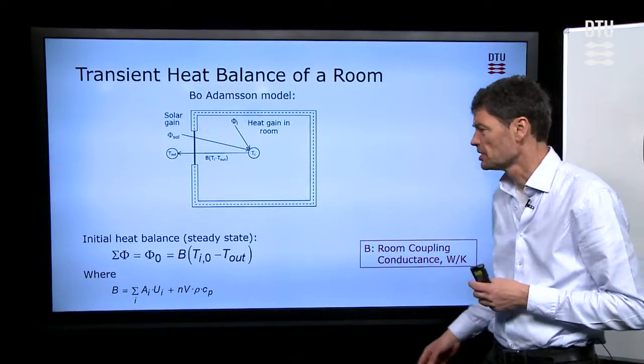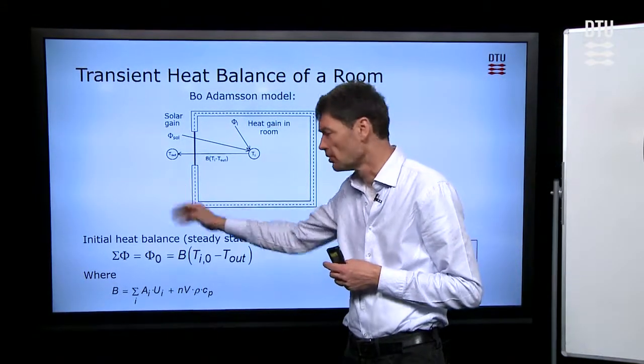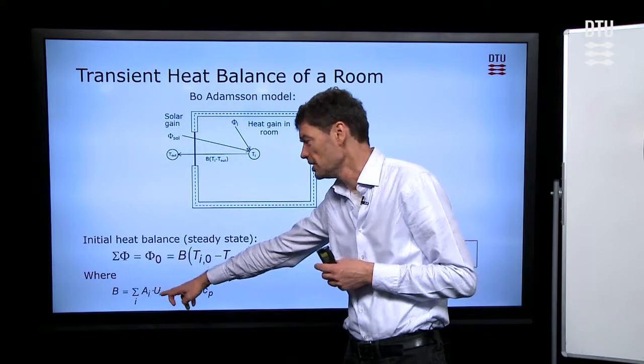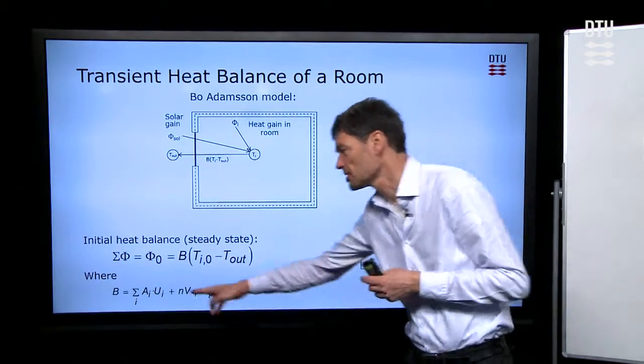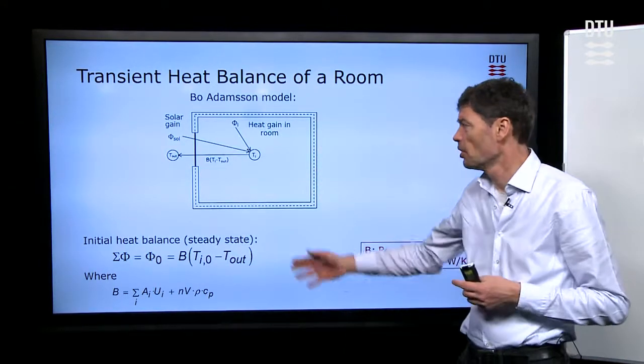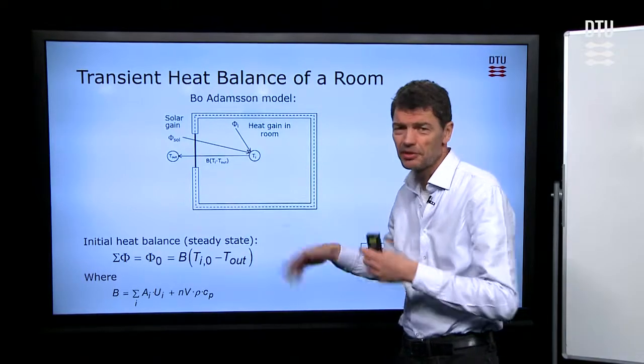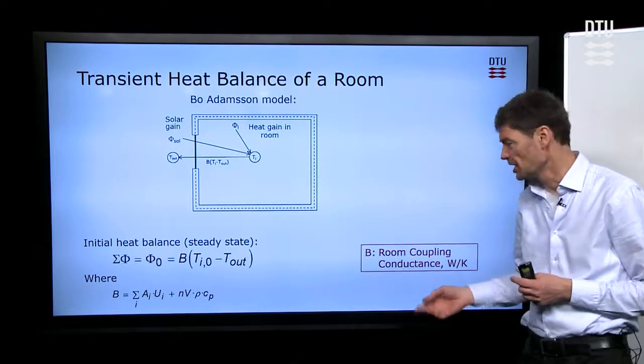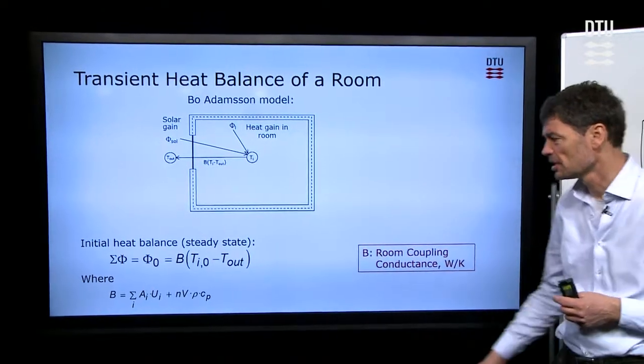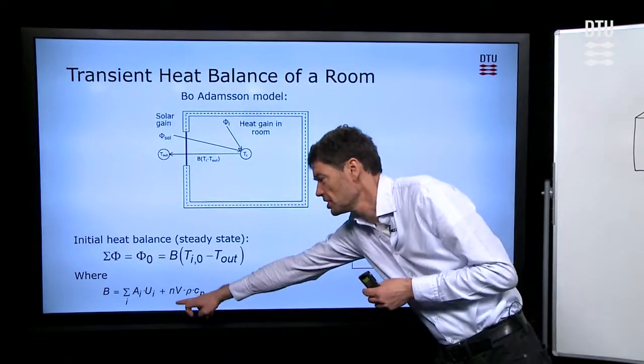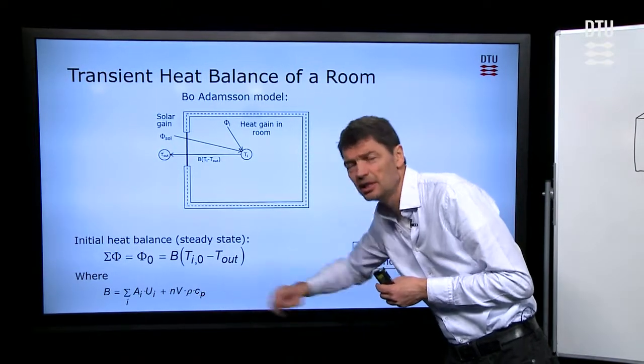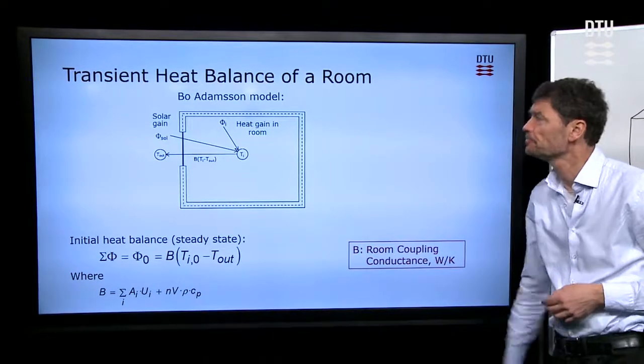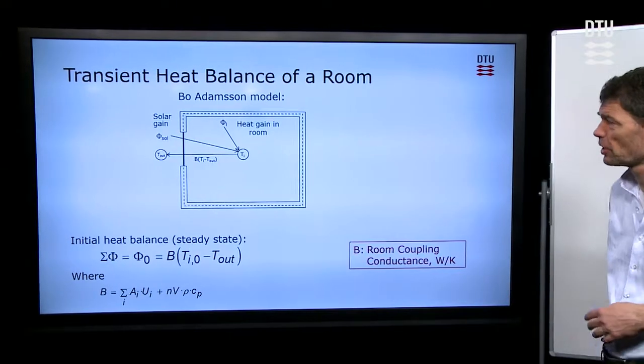The room coupling conductance comes from heat transmission through the walls, where we multiply the area and the U values for all walls and sum them up. And also, we have heat transmission because of ventilation heat loss, which we calculate the contribution for ventilation to the room coupling conductance by the last term here: air change, volume, density, and heat capacity of the air.